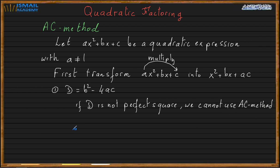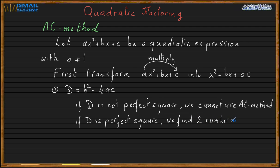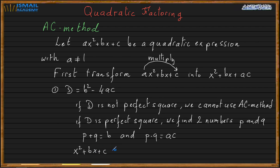If the discriminant is a perfect square, we look for two numbers P and Q such that P plus Q equals B, and P times Q equals AC. When you find those two numbers, you write the expression as x squared plus bx plus AC equals x plus P times x plus Q.